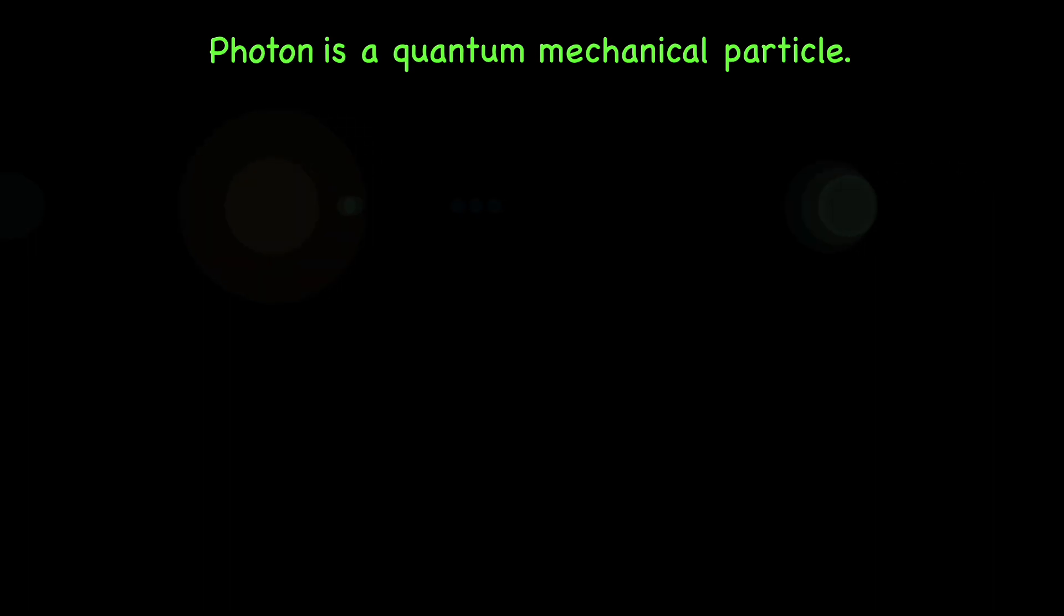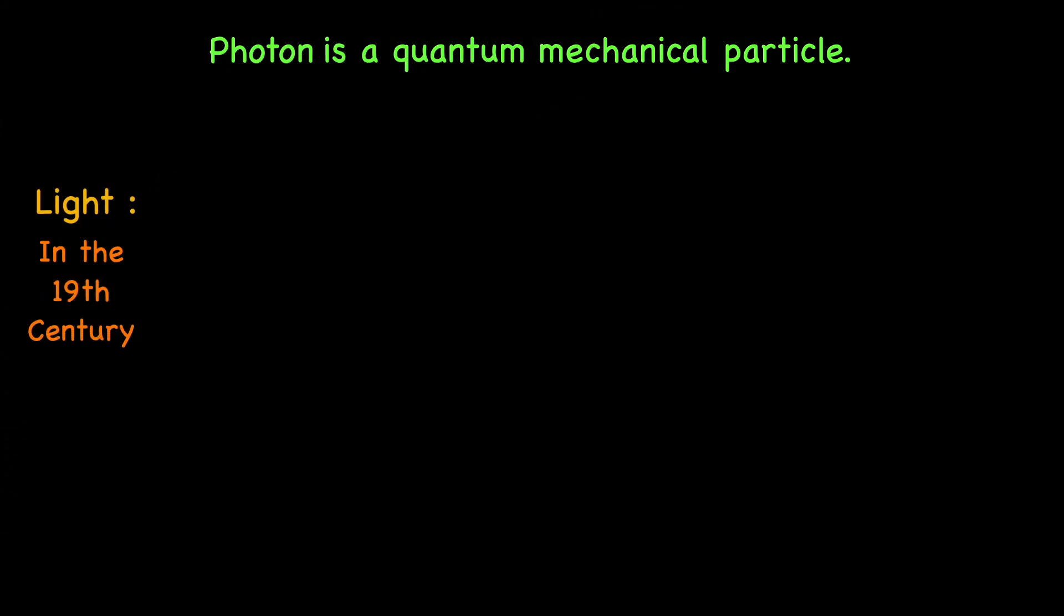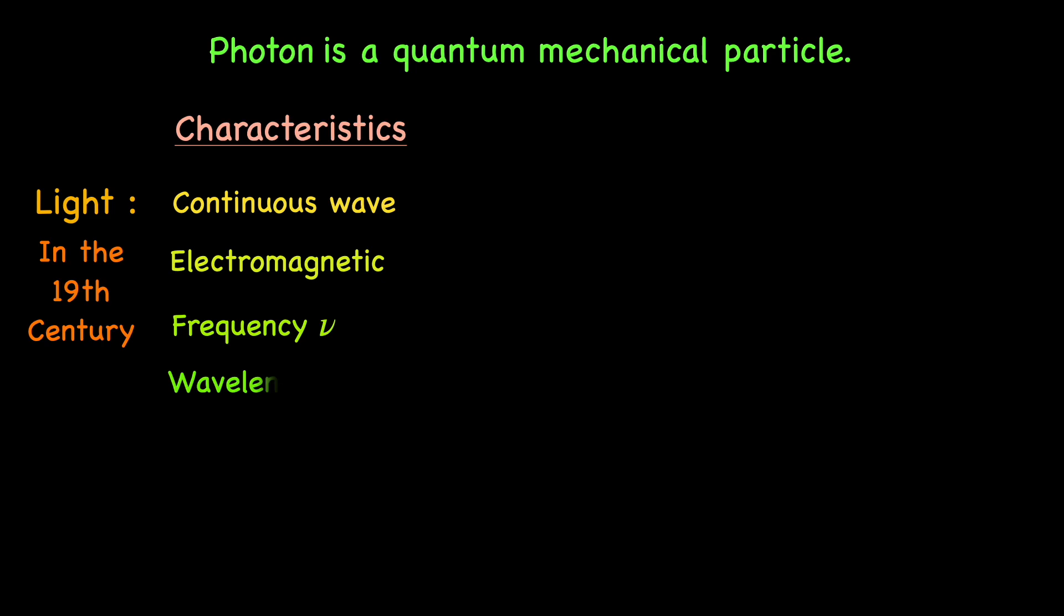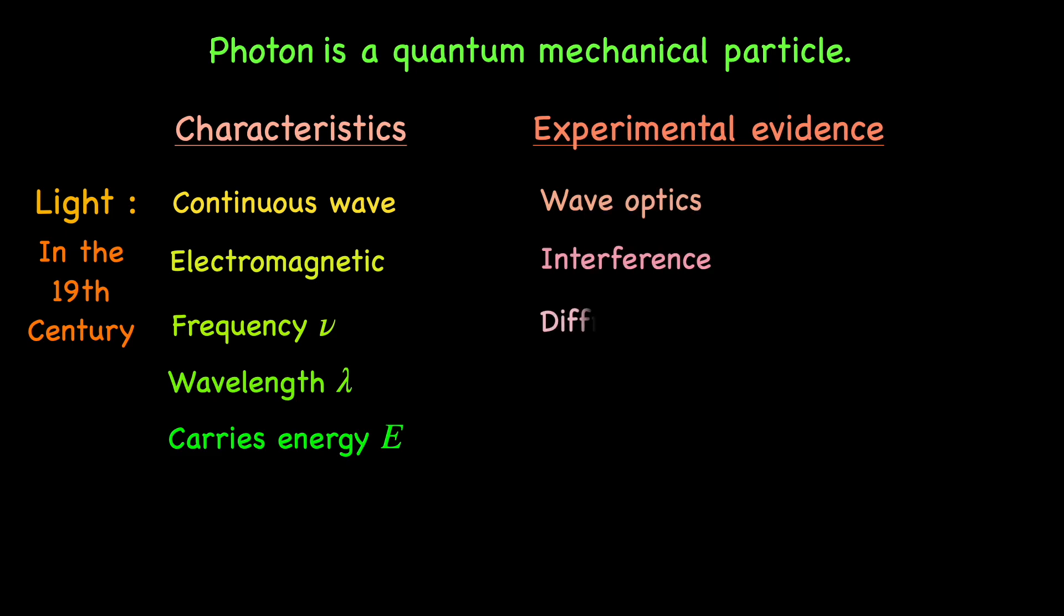we have to look back in the 19th century when we understood light classically as a continuous electromagnetic wave of some frequency nu and wavelength lambda, carrying some energy E. This notion came from the observations of interference and diffraction properties in wave optics.